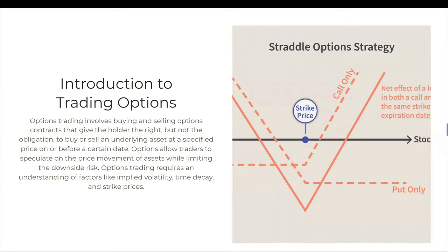This basic slide involves buying and selling — you guys know all this — but the part at the end I want you to pay attention to: options trading requires an understanding of implied volatility, time decay, and strike prices. This couldn't be more true. If you're investing, you don't need to worry about this stuff, but trading options, those three things can make or break the same setup. Knowing where implied volatility is, picking the right strikes, and knowing the right expirations makes the difference.